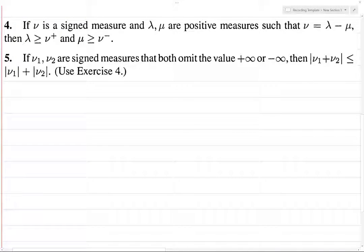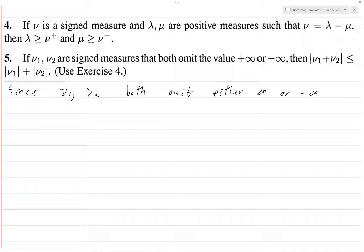So what we have to do is explicitly state that we're using this fact. Since ν₁ and ν₂ both omit either infinity or minus infinity, so maybe one can be finite and one can be plus or minus infinity, or they could both take the value infinity, or they could both take minus infinity, but they can't have one is infinity and the other is minus infinity.